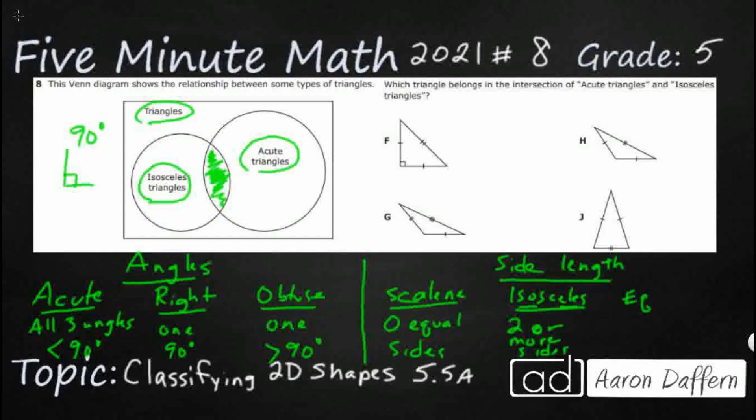So we have equilateral triangles. Those are all three. All three sides are equal.